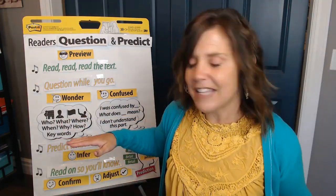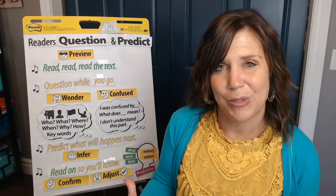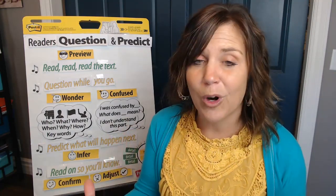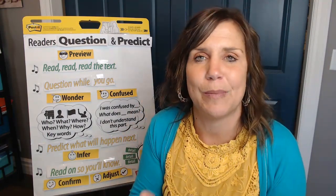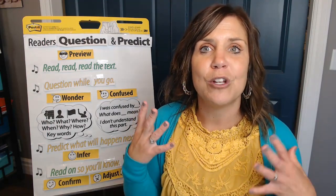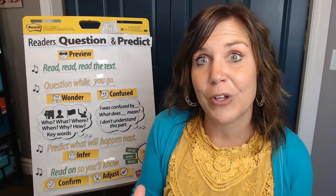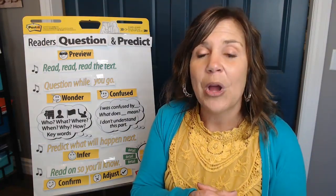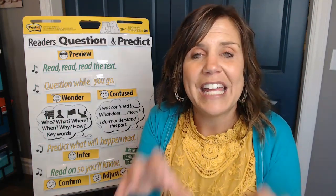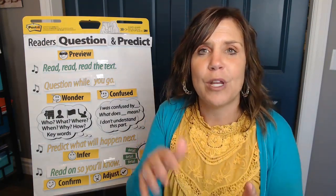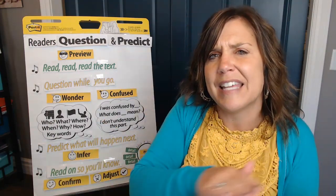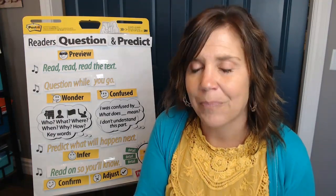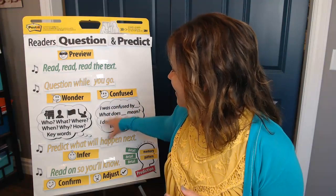In the last lesson we talked about sometimes we get confused when we're reading. We read a new vocabulary word — maybe a word we've never seen before, or never seen used like this before. We talked about how you can use two different types of clues: picture clues, where you look in the picture to figure out that word, or print clues in the text. Sometimes if you read a few more words or reread the sentence, you'll see clues in the words that help you figure out that tricky vocabulary word.